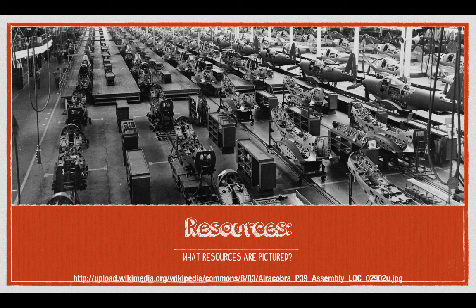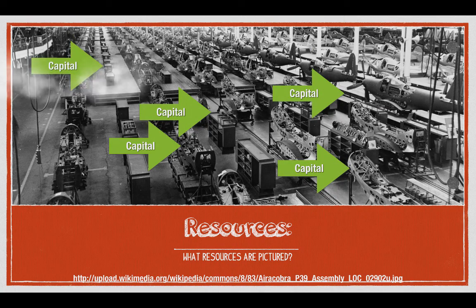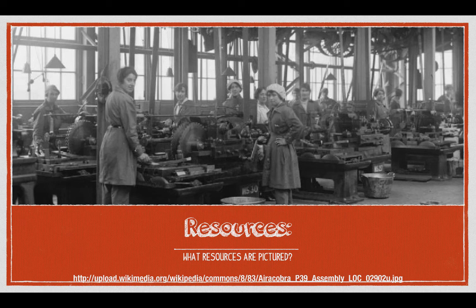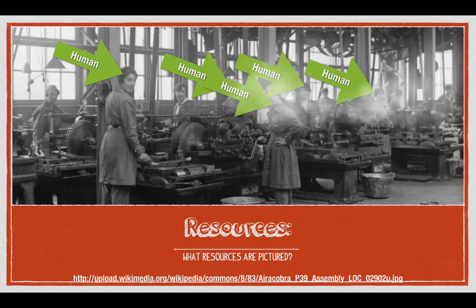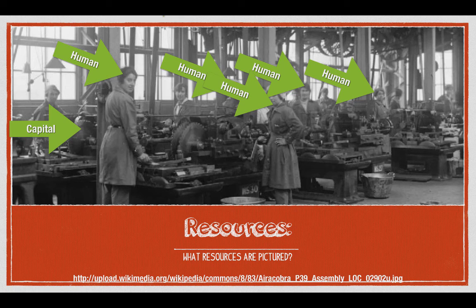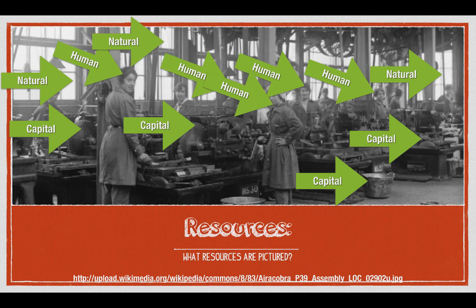Here's a factory that made the P-39 fighter plane during World War II. Since there are no workers visible, most of these things are going to be capital items used to assist in the production of that plane. Next, we have some women working in a factory with a giant saw. We can see our human resources in the women helping produce a good. The saws, tables, different tools, and buckets are all capital resources. There's also some natural light coming in through the windows, which is a natural resource.